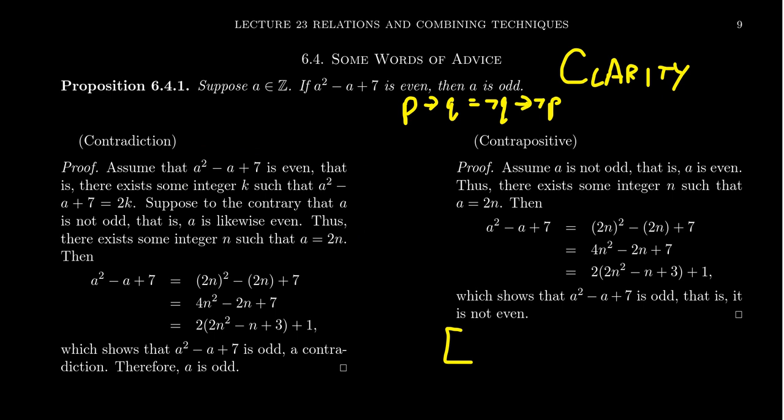Now, I don't want you to get the false impression that this is always the case. Sometimes contrapositive might be more awkward than contradiction. Sometimes the direct proof is the best proof, but sometimes direct, sometimes contradiction is the best one. So our metric should be always clarity. What makes for the most clear proof?